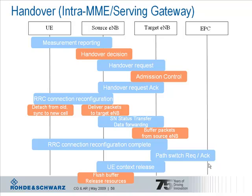The source will request a handover so that the target can do admission control and check whether it can accept the new terminal. In case it can accept the handover it will send a handover request acknowledge message via the X2 interface.